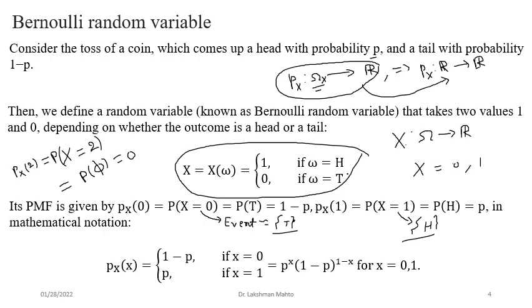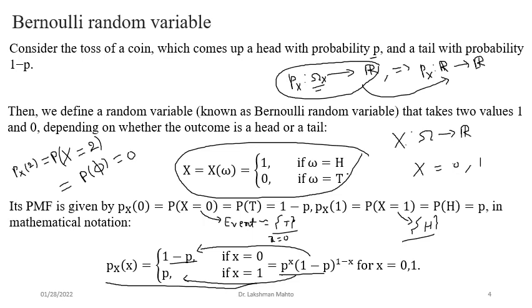We can unify the two cases p(0) = 1 − p and p(1) = p into a single expression: p(x) = p^x · (1 − p)^(1−x), where x takes only values 0 or 1. When x = 0: p^0 · (1−p)^1 = 1−p. When x = 1: p^1 · (1−p)^0 = p. This is the unified notation of the probability mass function for the Bernoulli random variable.